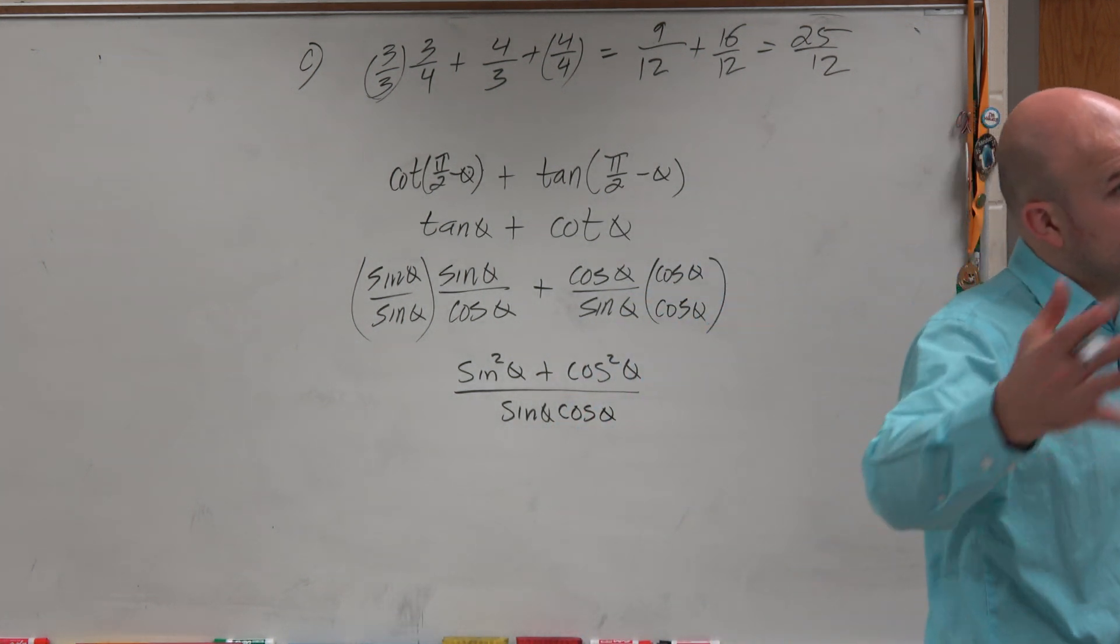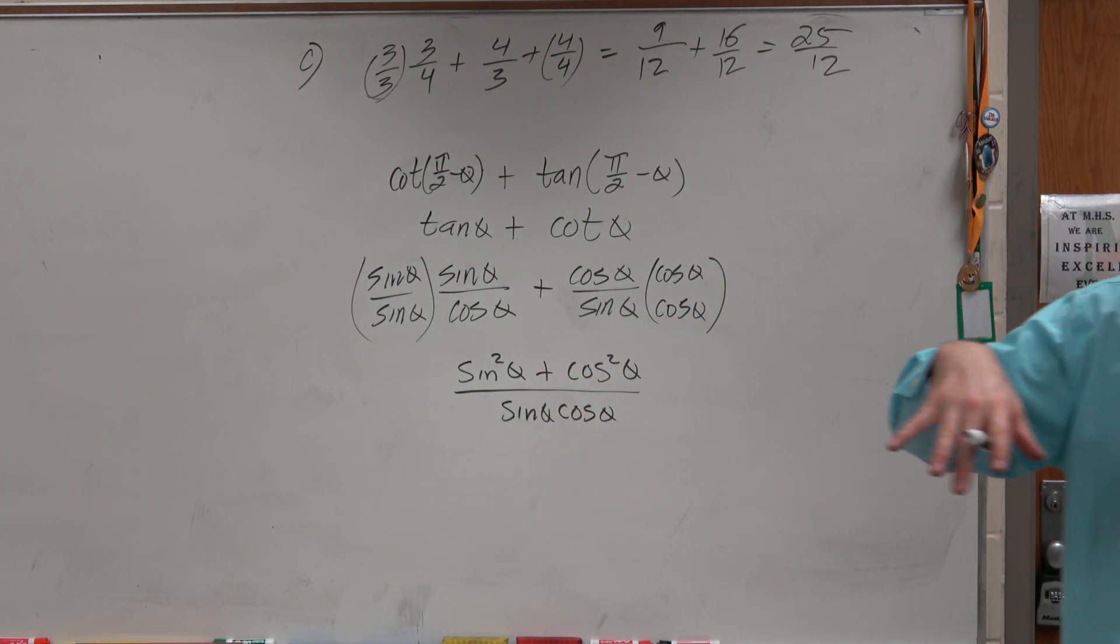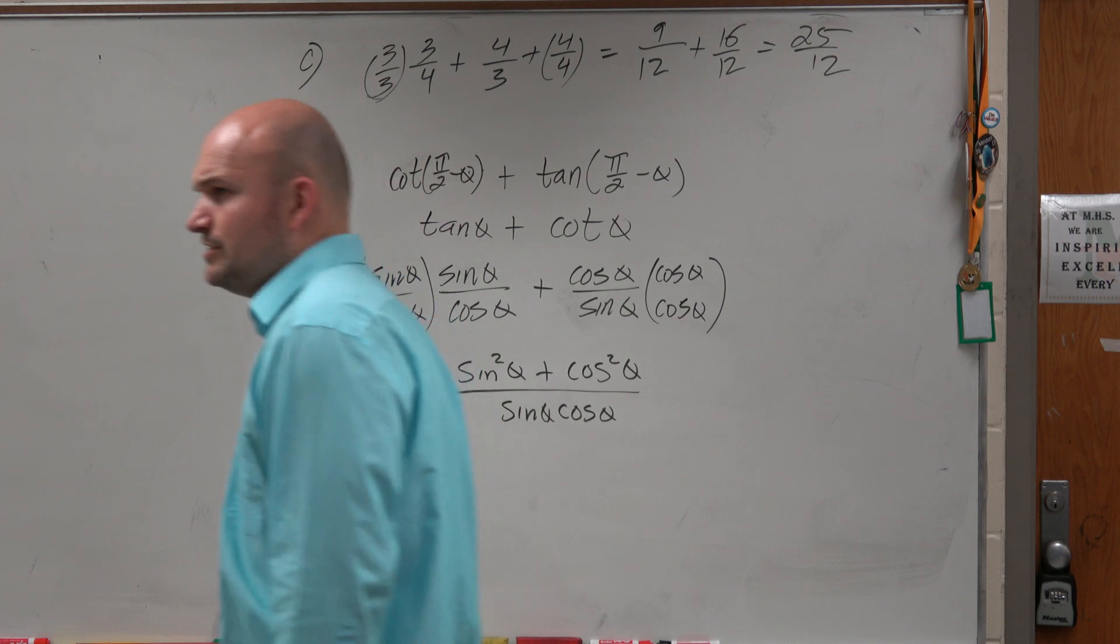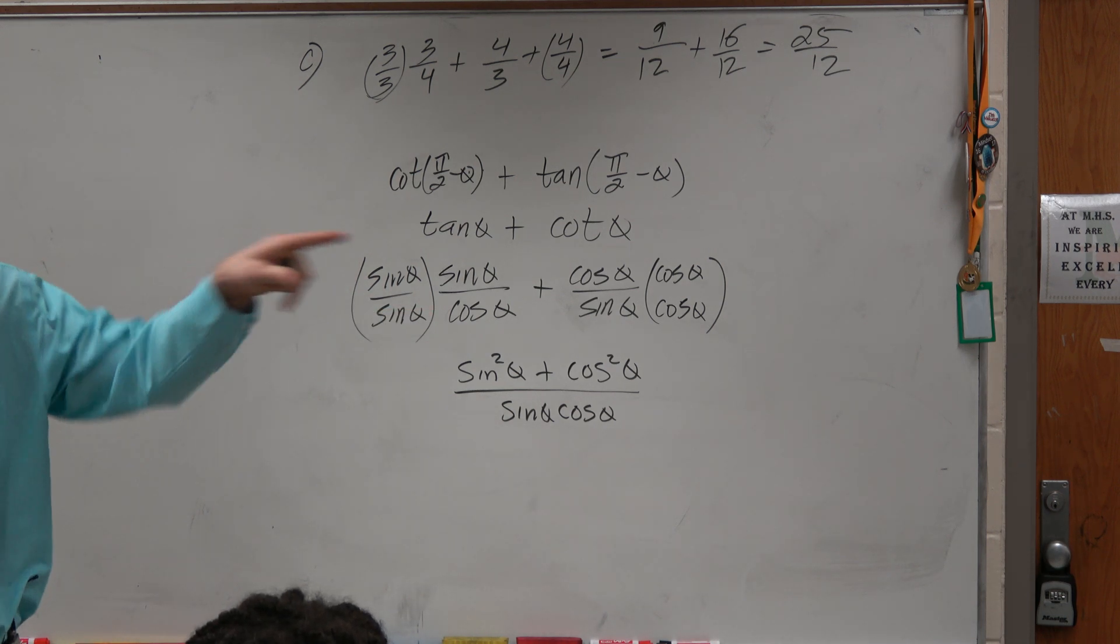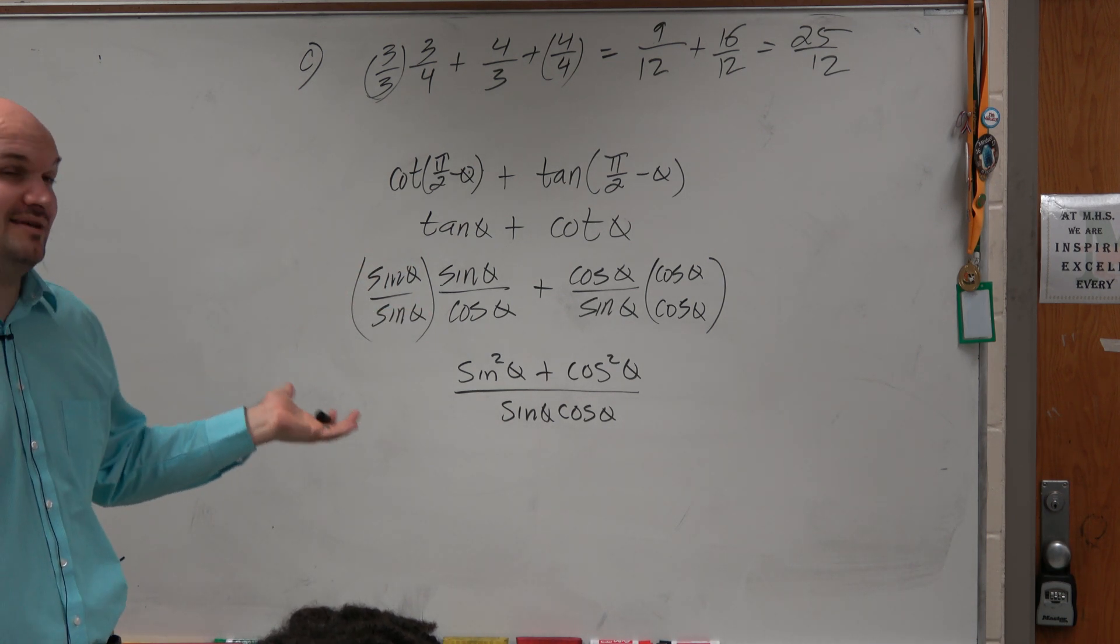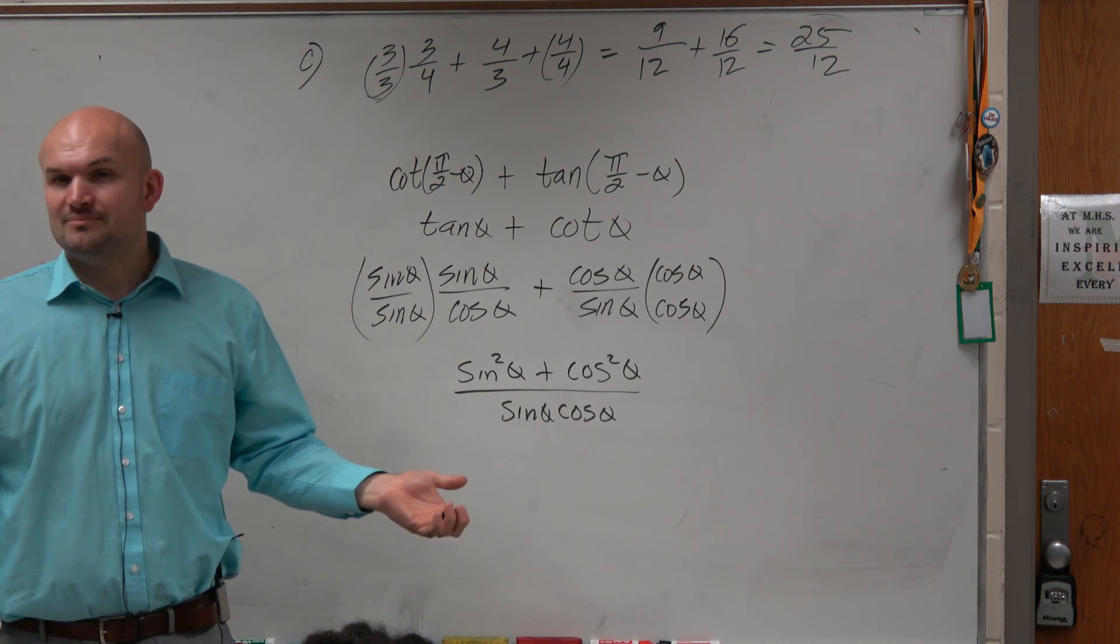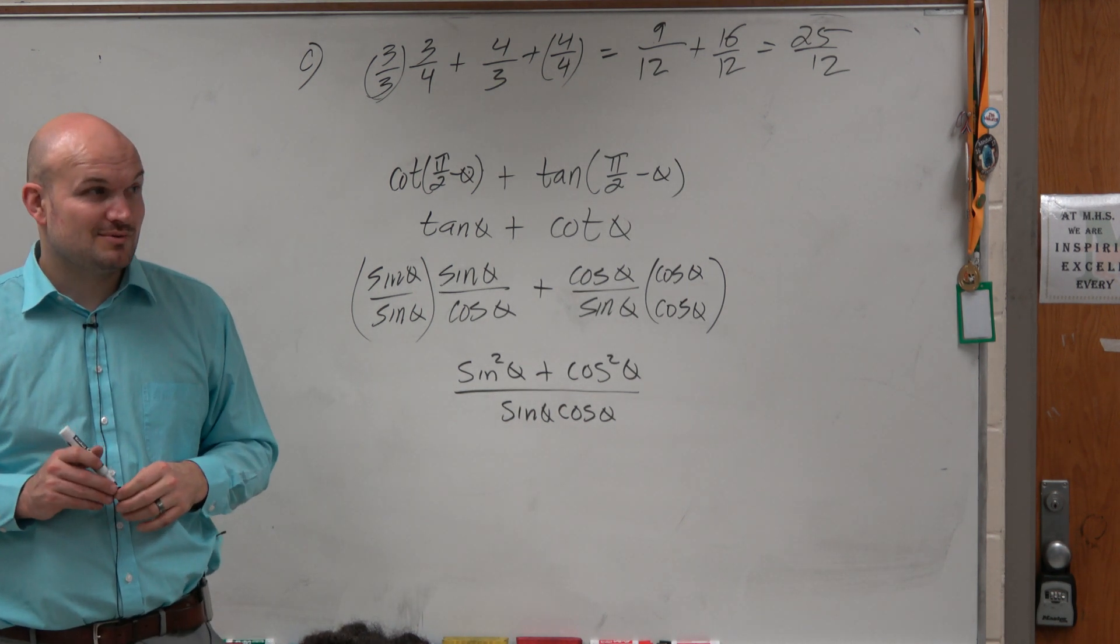Now, we haven't gone into this next set of identities, but can we simplify this a little bit further? I mean, you can't really do anything with sine times cosine. But what about the sine squared and the cosine squared?